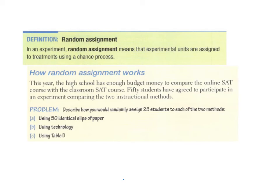One thing that would help make that experiment better is random assignment. In an experiment, random assignment means experimental units are assigned to treatments using a chance process — not just signing up all AP statistics students for the online SAT review. So assignment to whether they took the online course or not should be based on a chance process.